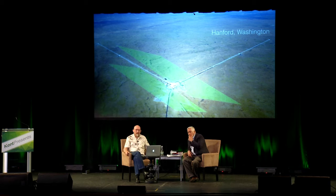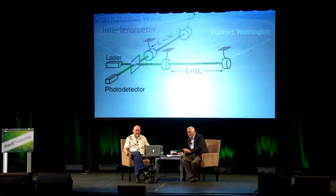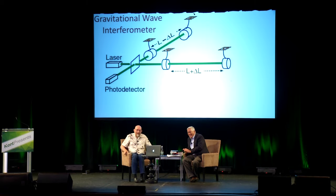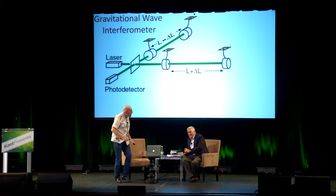What you see in these detectors are long vacuum pipes — four kilometers, two and a half miles long. I'm going to show you a theorist's version of what's inside. What's inside is really complicated, but I'm a theorist, so I make it look really simple.